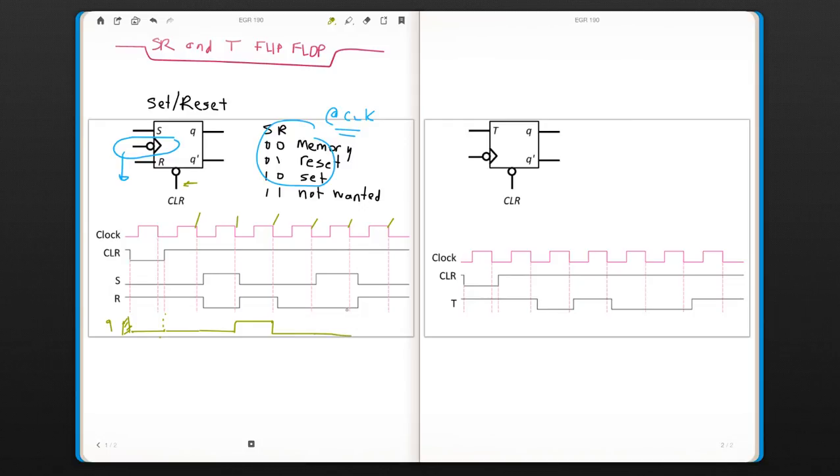0, 1. So set is 1. 0, 1. Set is 0. Reset is 1. So it's going to be like this.